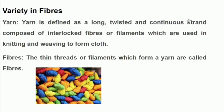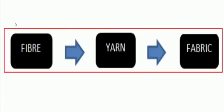There is variety in fibers. Yarn is defined as a long, twisted and continuous strand composed of interlocked fibers or filaments, which are used in knitting and weaving to form clothes. First we have fiber — these are thin threads or filaments which form a yarn. So the chain is: fiber to yarn, yarn to fabric, and fabric to clothes.